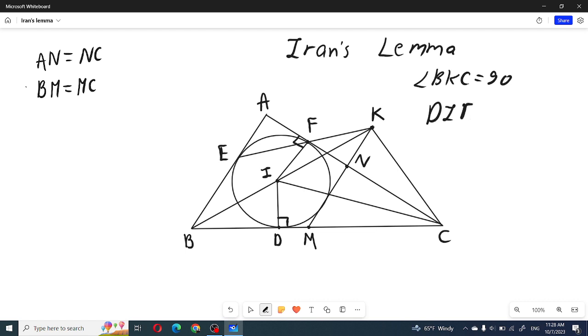DIFC is cyclic and its diameter must be IC because we are given that angles F and D are 90 degrees. So if you want to show that angle IKC is also 90 degrees, this means that K must be on this cycle.